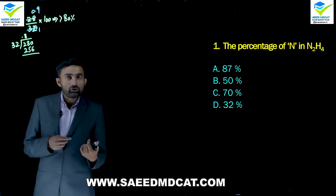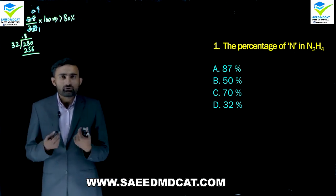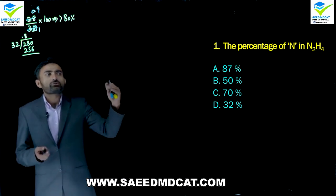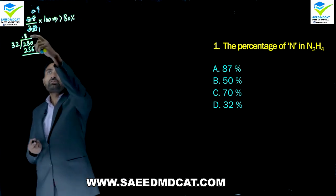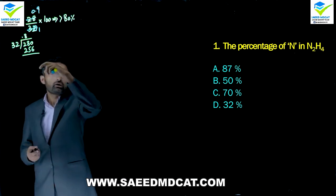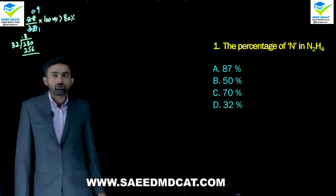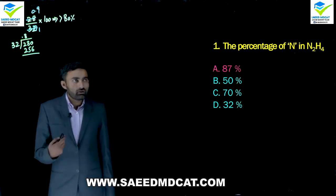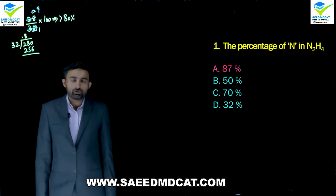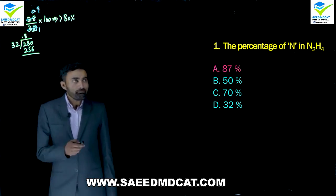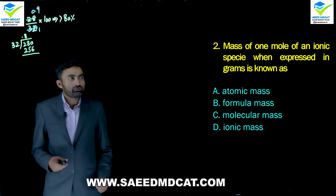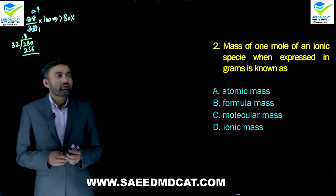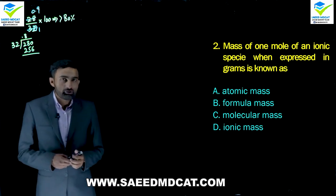The options like 87%, 88%, 89% are not present. From the first digit alone we can tell that 80%+ is our answer. So option A (alpha) is correct here. Moving to Question 2: mass of one mole of an ionic species expressed in grams.